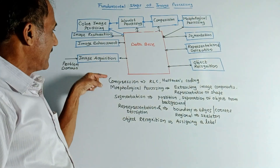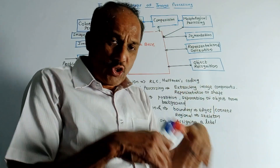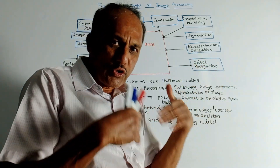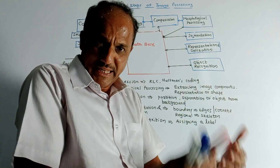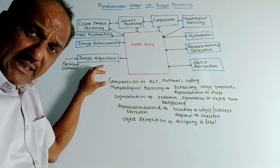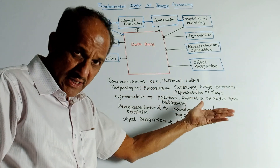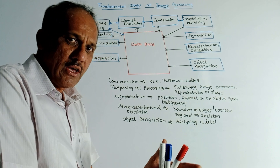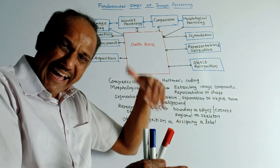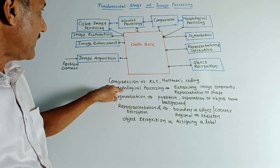The next block is compression. To store an image without compression, a large amount of memory space is required. To reduce the required memory space, we compress an image. Different compression algorithms are available, such as RLC (run-length coding) and Huffman coding. By using these algorithms, we can compress the image so that we can store the maximum number of images in the available memory space.